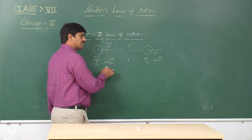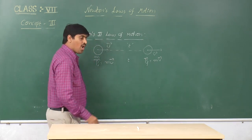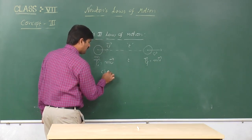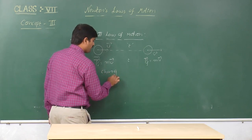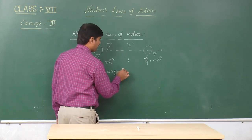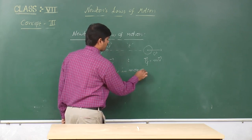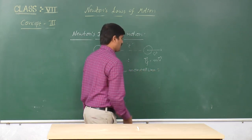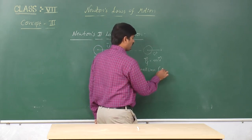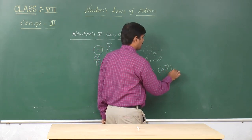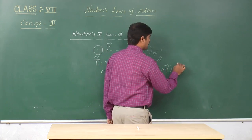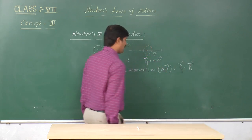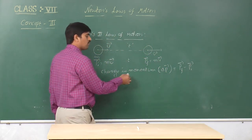Now, in this time duration t, the change in momentum of the body — we denote it as Δp — is nothing but p_f minus p_i. So this is called the change in momentum.